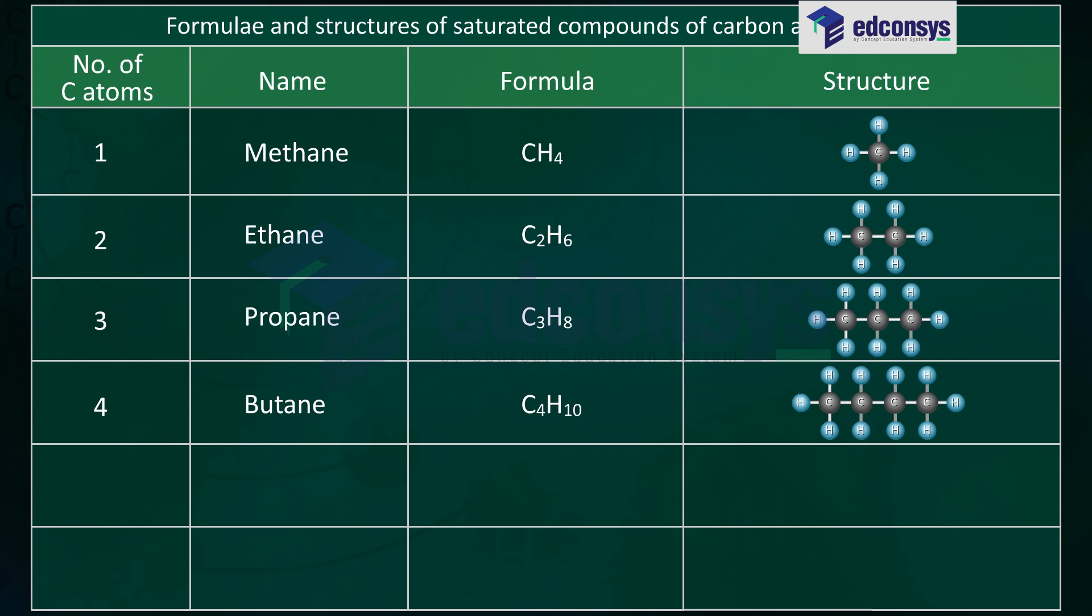Number of carbon atoms 5, name pentane, formula C5H12. Number of carbon atoms 6, name hexane, formula C6H14.